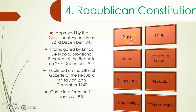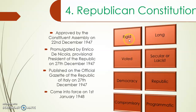It is a rigid constitution — it cannot be changed by a normal law. This was a key element decided because of what had happened with the Statuto Albertino, which the fascist party had been able to subvert without even changing many laws. By changing just a few laws, they completely changed the meaning of the Albertino statute. So that couldn't be allowed to happen to the new constitution.